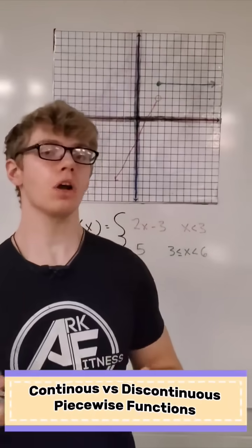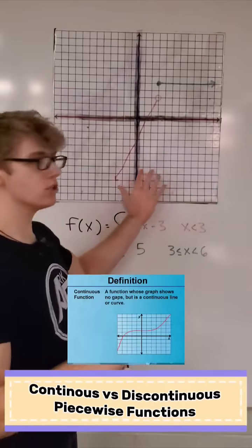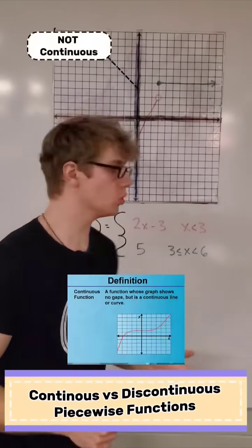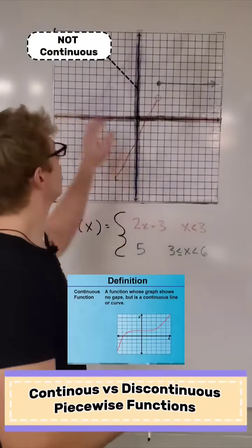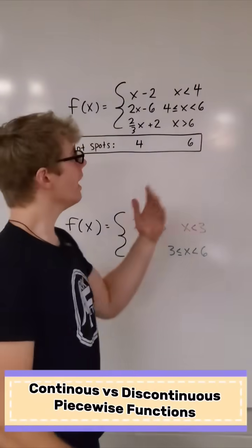For a function to be continuous, we need to be able to draw it without lifting up our pencil. This is very clearly not continuous — we didn't even need to use the equation down here. But what if we didn't have that?